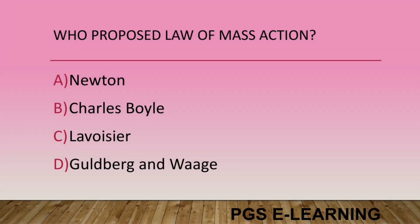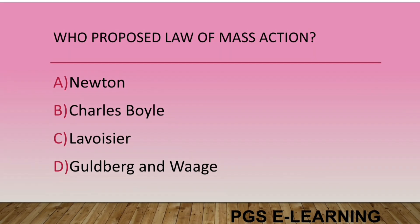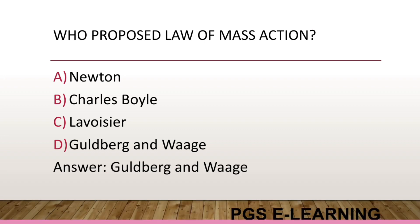Who proposed the law of mass action? Option A, Newton. Option B, Charles Boyle. Option C, Leviser. Option D, Guldberg and Waage. Correct answer is Guldberg and Waage.